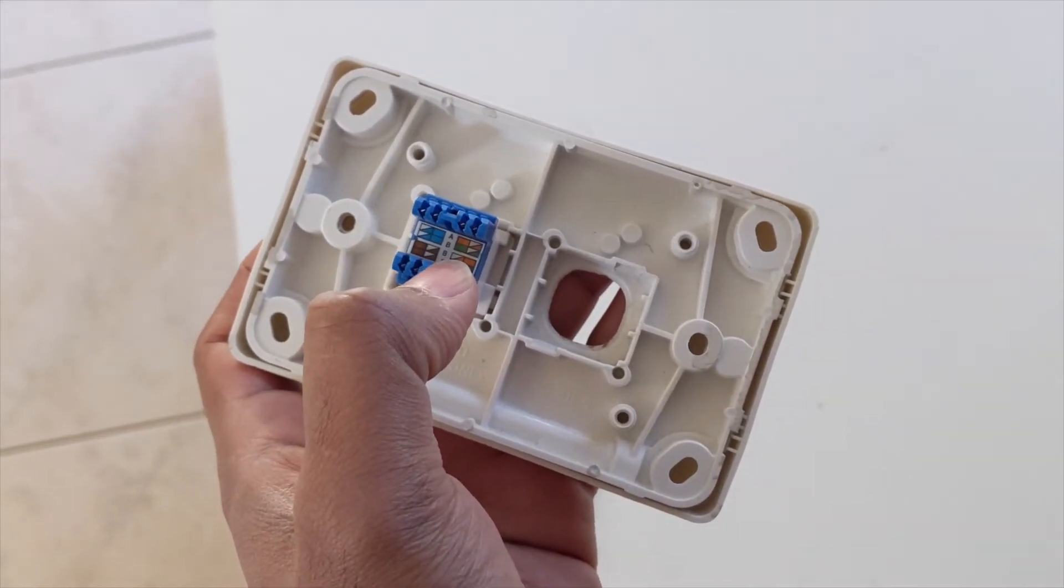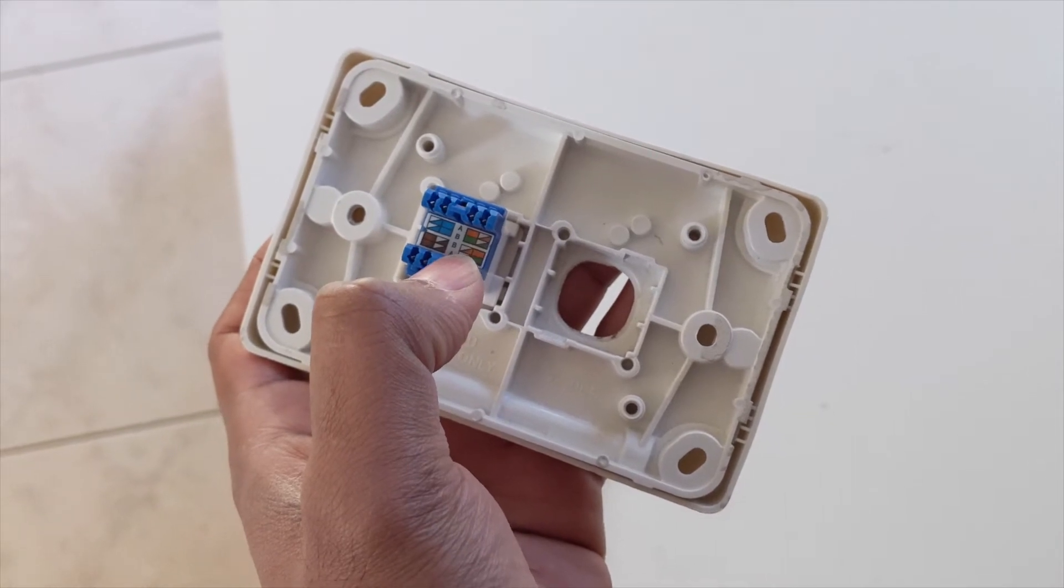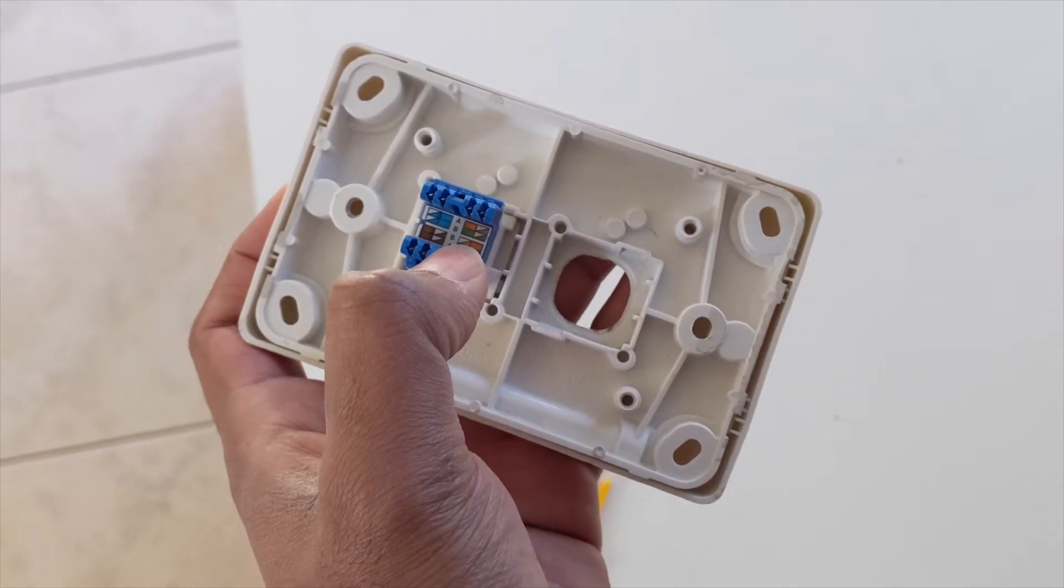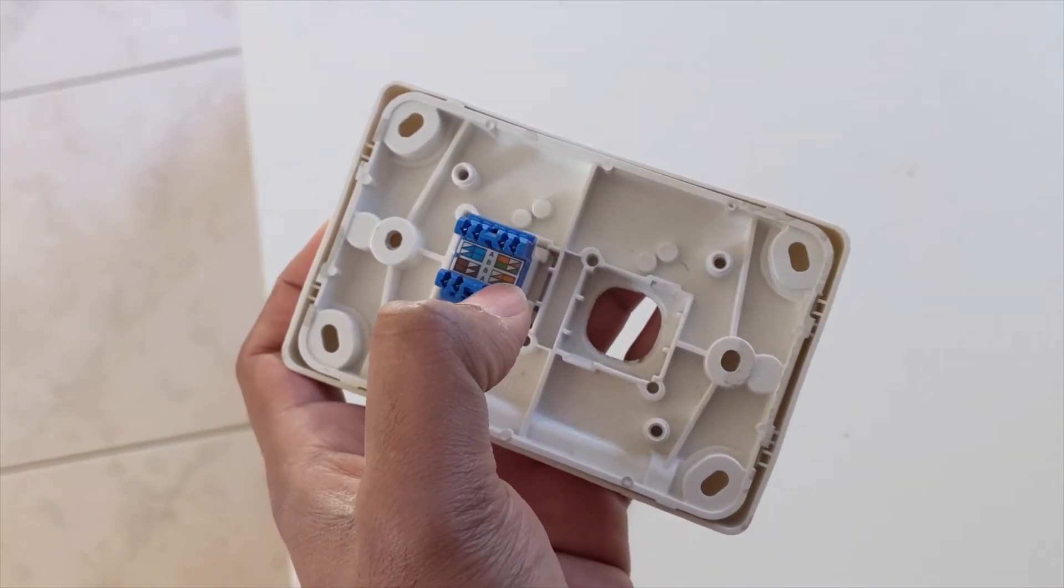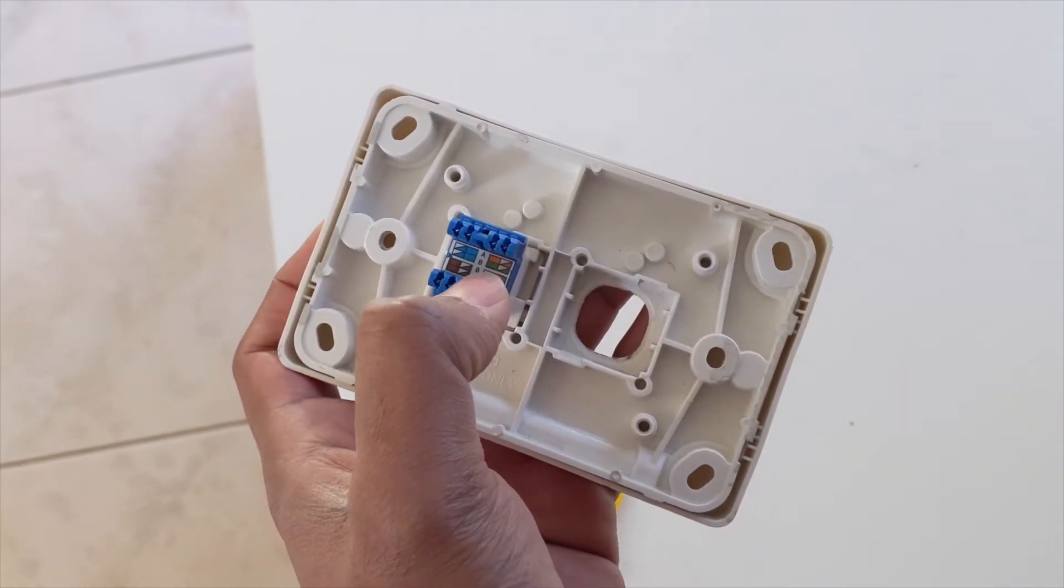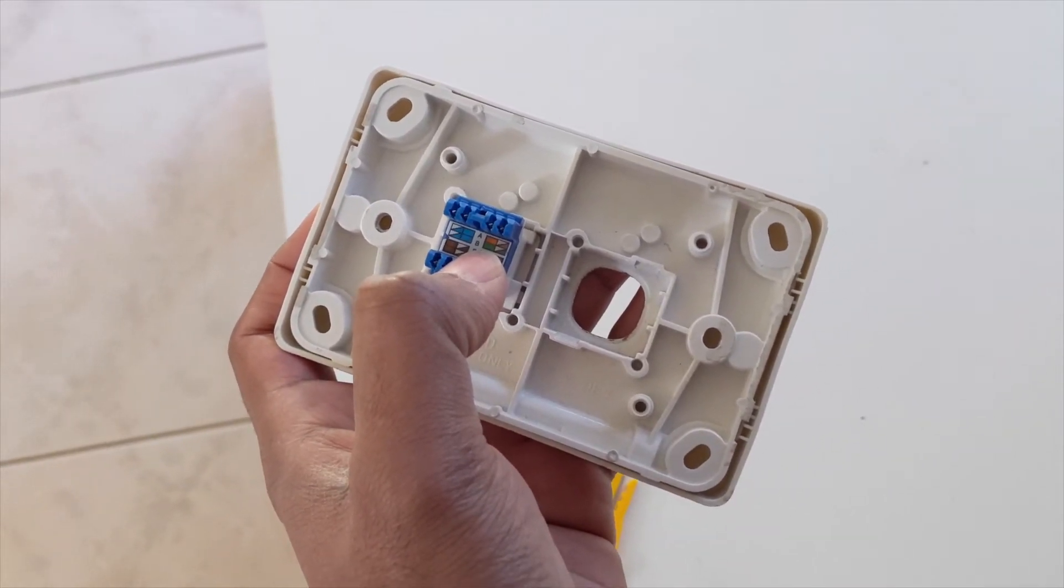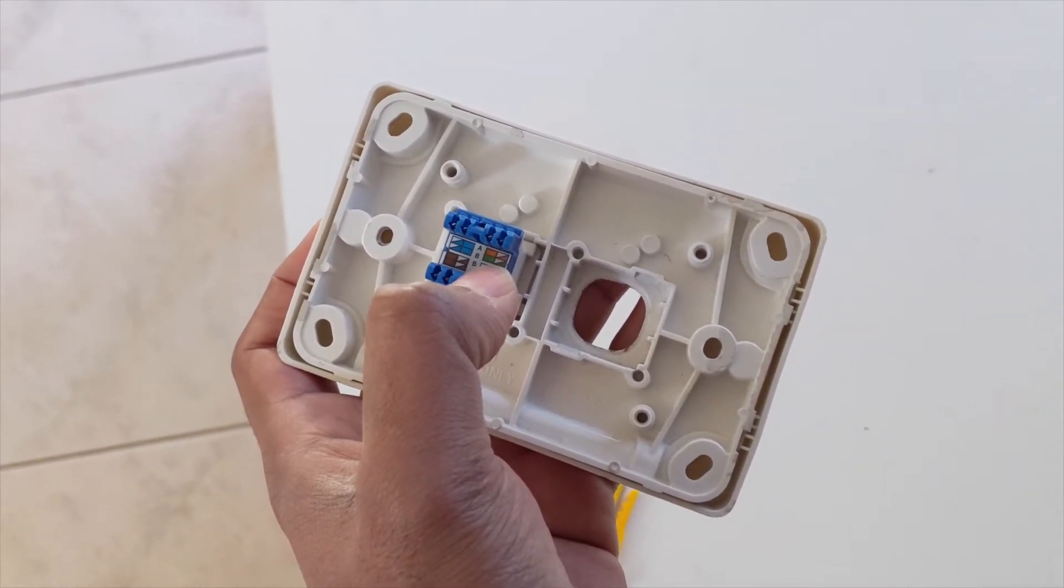In the bottom row, cover the A and you'll see white-orange and orange. And here it will be green and green-white.